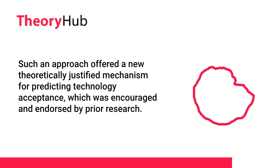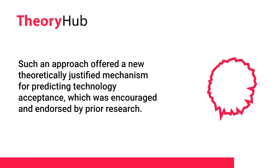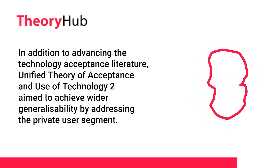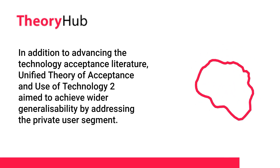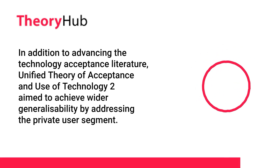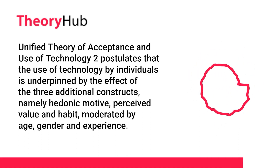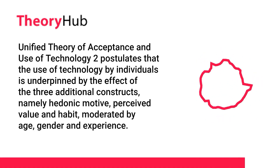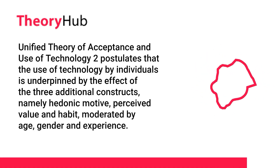The authors updated the theory by introducing three new constructs and altering some relationships in the original model to adapt it to consumer technology use. Such an approach offered a new theoretically justified mechanism for predicting technology acceptance, encouraged and endorsed by prior research. In addition to advancing the technology acceptance literature, UTAUT2 aimed to achieve wider generalizability by addressing the private user segment. UTAUT2 postulates that the use of technology by individuals is underpinned by three additional constructs, namely hedonic motivation, perceived value and habit, moderated by age, gender and experience.